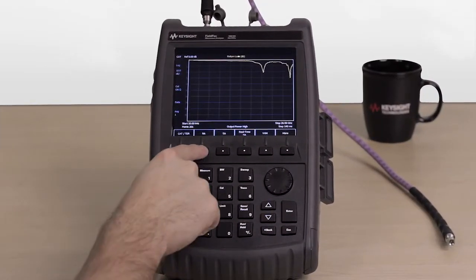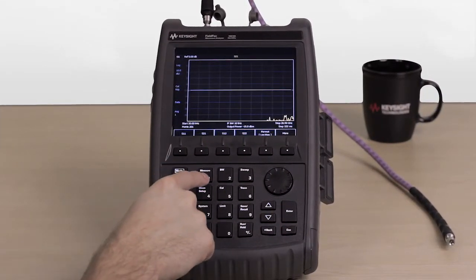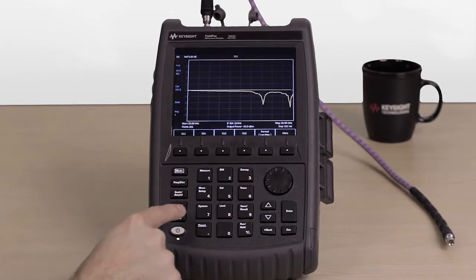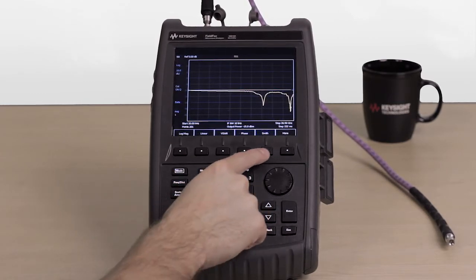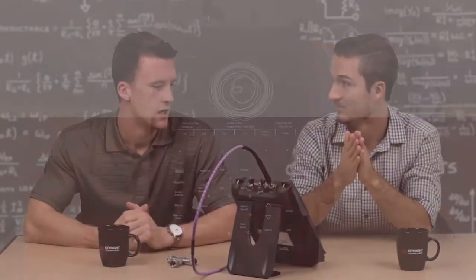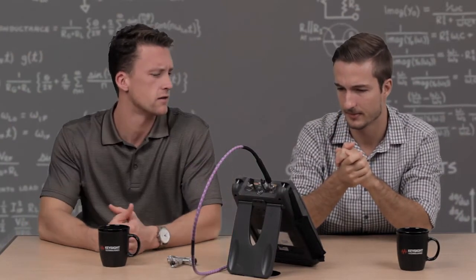We're going to go to Mode, NA, Measure, S11, Format, Smith, and we're going to get our Smith chart. But that's not really what we're seeing on the screen here.